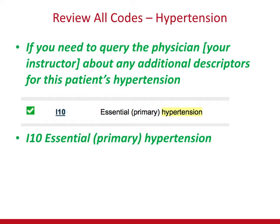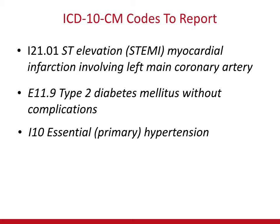So we now have another confirmed code: I10, essential primary hypertension. With confidence, you have three codes that tell the whole story about Rhonda Carter's admission and hospital stay — providing the complete picture of the care given by these excellent healthcare professionals — and you can obtain optimal, proper, legal reimbursement for your facility and professionals. The three codes are: I21.01, E11.9, and I10.